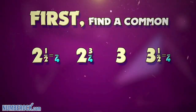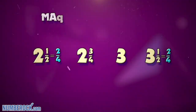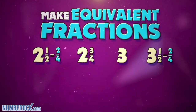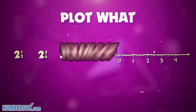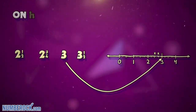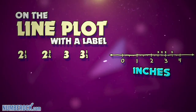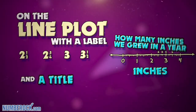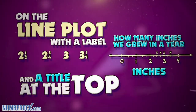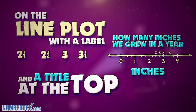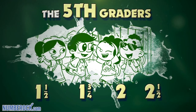First find a common denominator. Make equivalent fractions for all the data. We'll plot what you got on the line plot with a label and the title at the top.